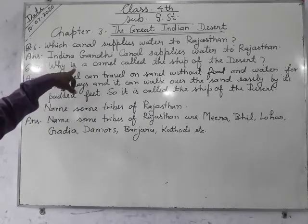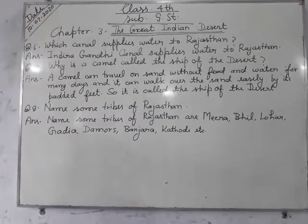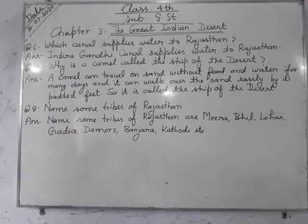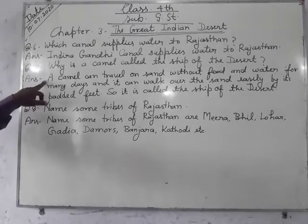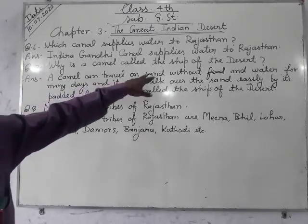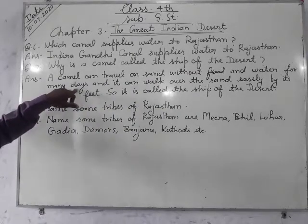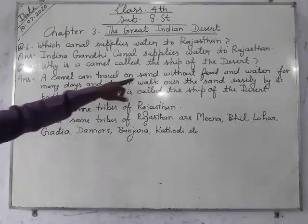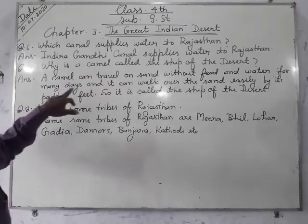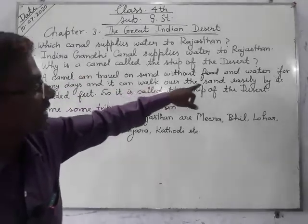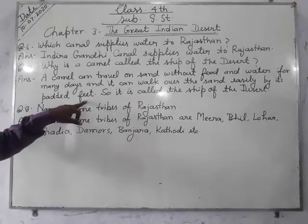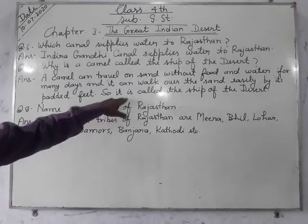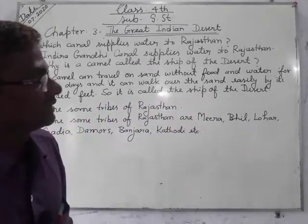Seventh question: Why is a camel called the ship of the desert? A camel can store food and water and travel for many days without food and water. It can also walk over sand easily with its broad, flat feet. So it is called the ship of the desert.